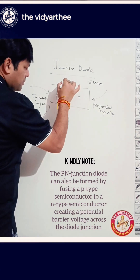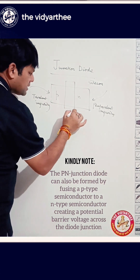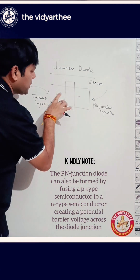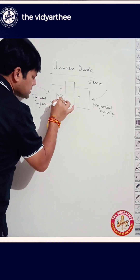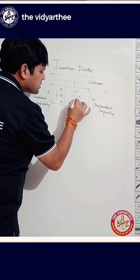Now, while forming this, there will be an imaginary line — this is a common boundary between P and N. So what happens is here you have holes and here you have electrons.